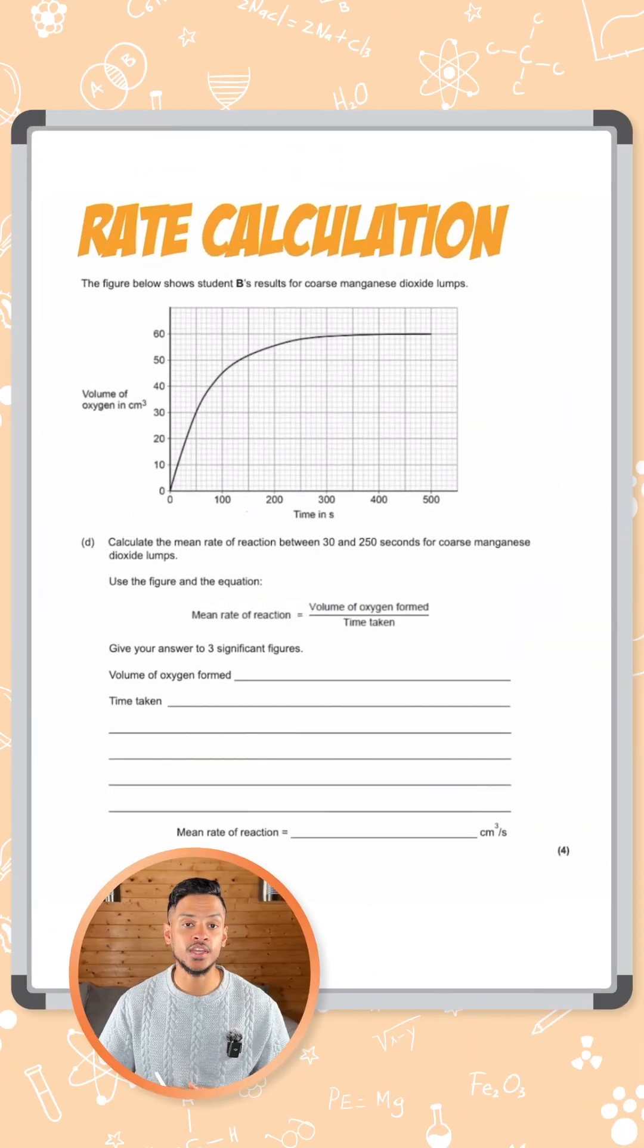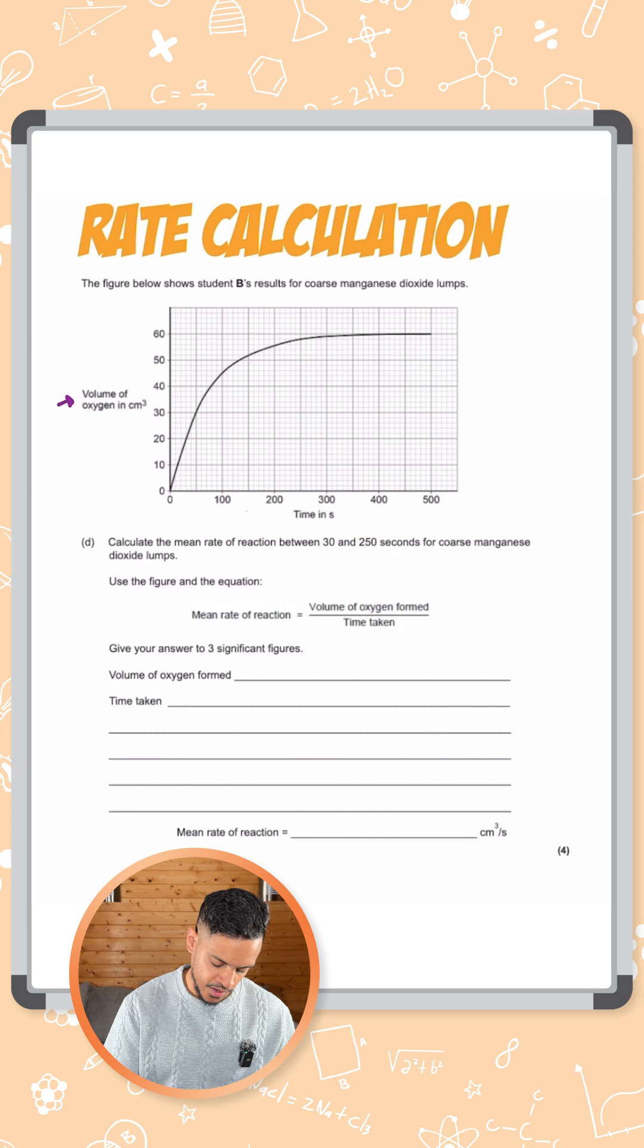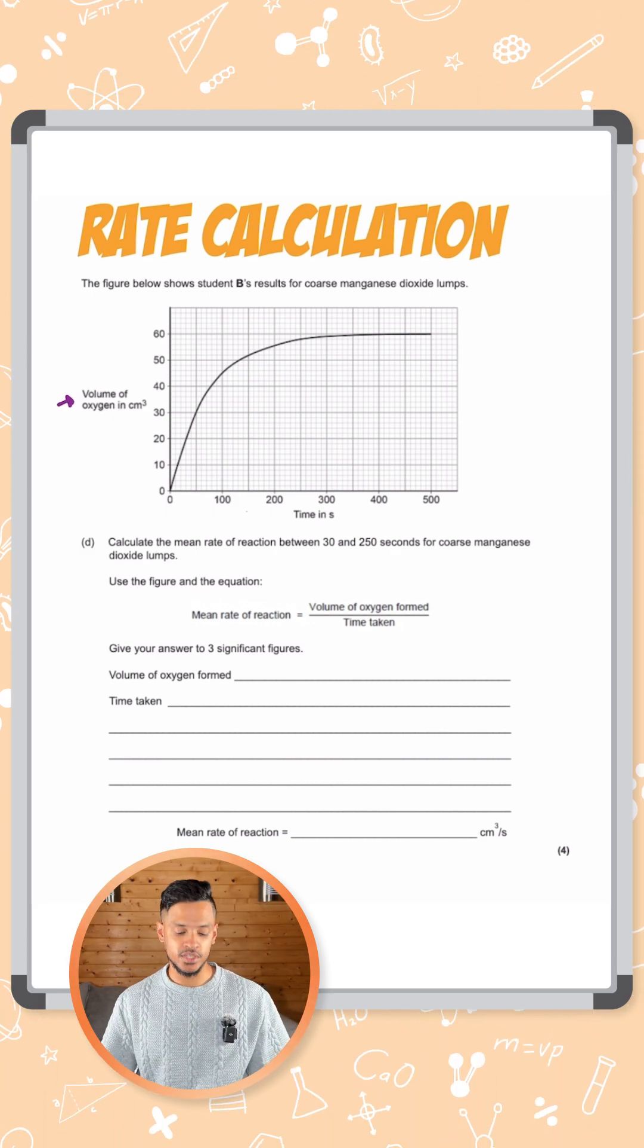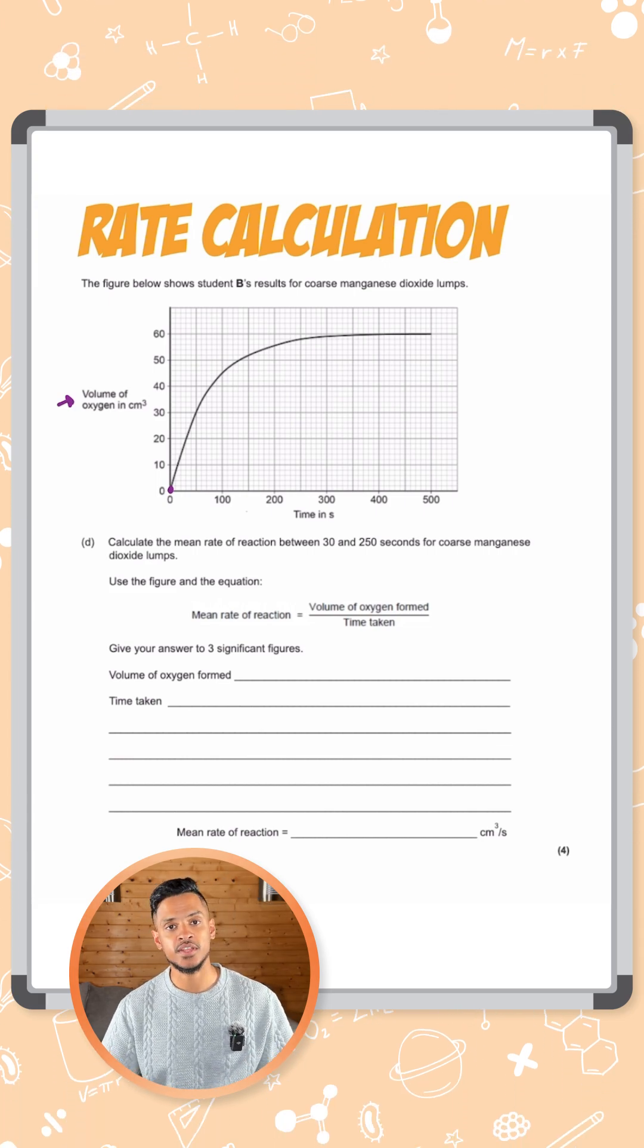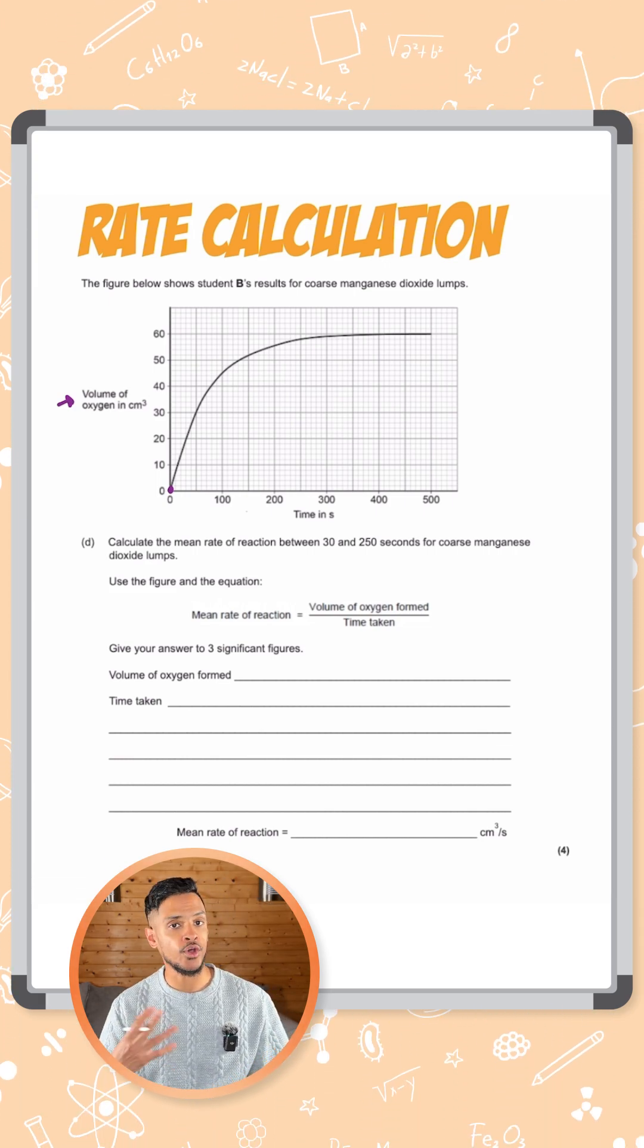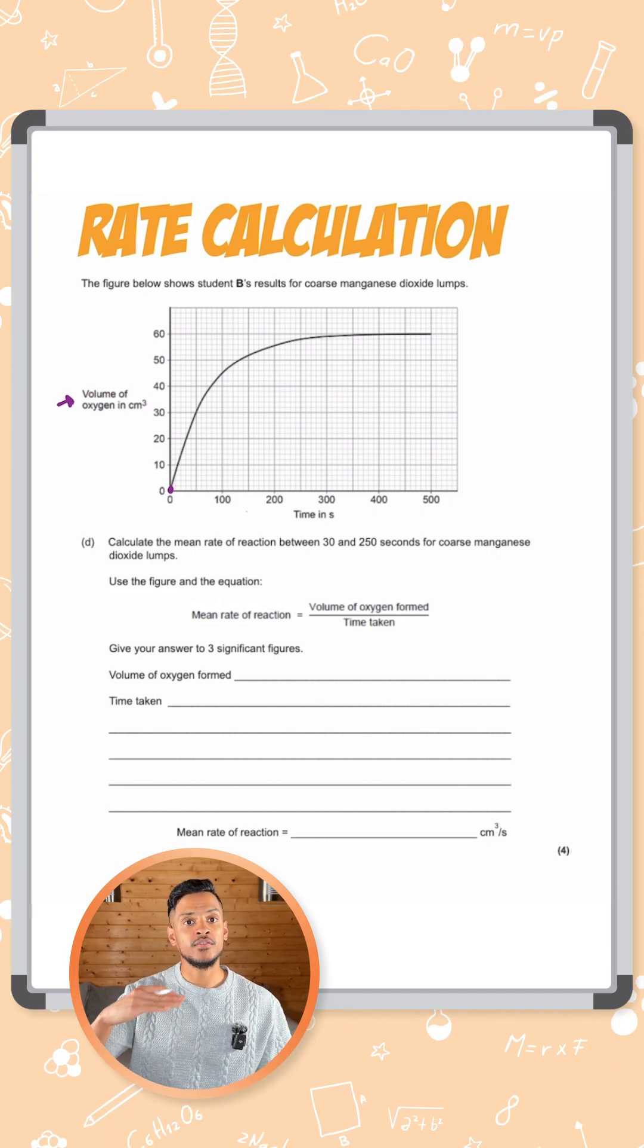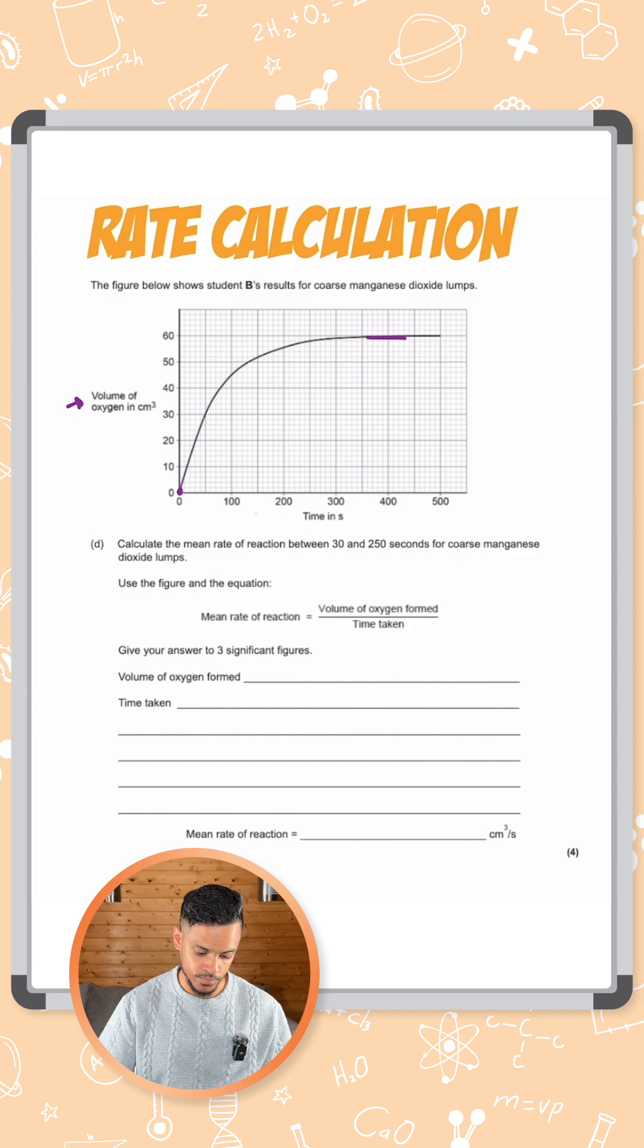Right, a graph question here asking you to calculate the rate of a reaction. So here we have a graph with the volume of oxygen being monitored and you can see here we start off with zero oxygen at the beginning, so that's probably the product. You have no product at the beginning and as the reaction goes on, the amount of oxygen increases because more and more product is being formed.